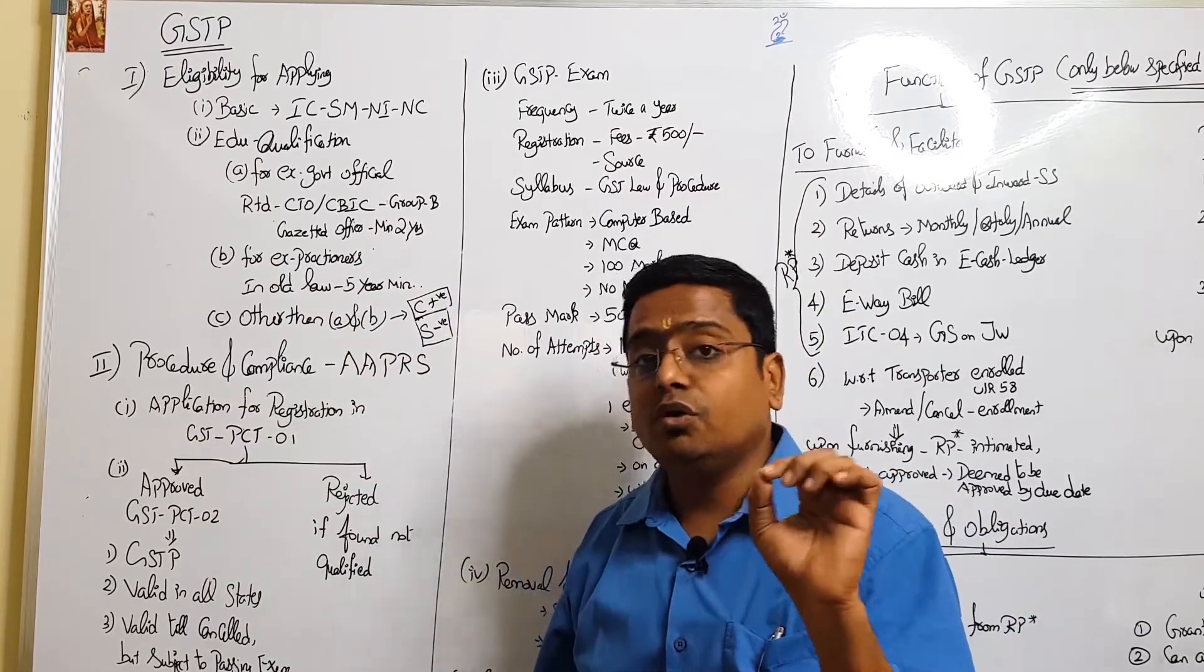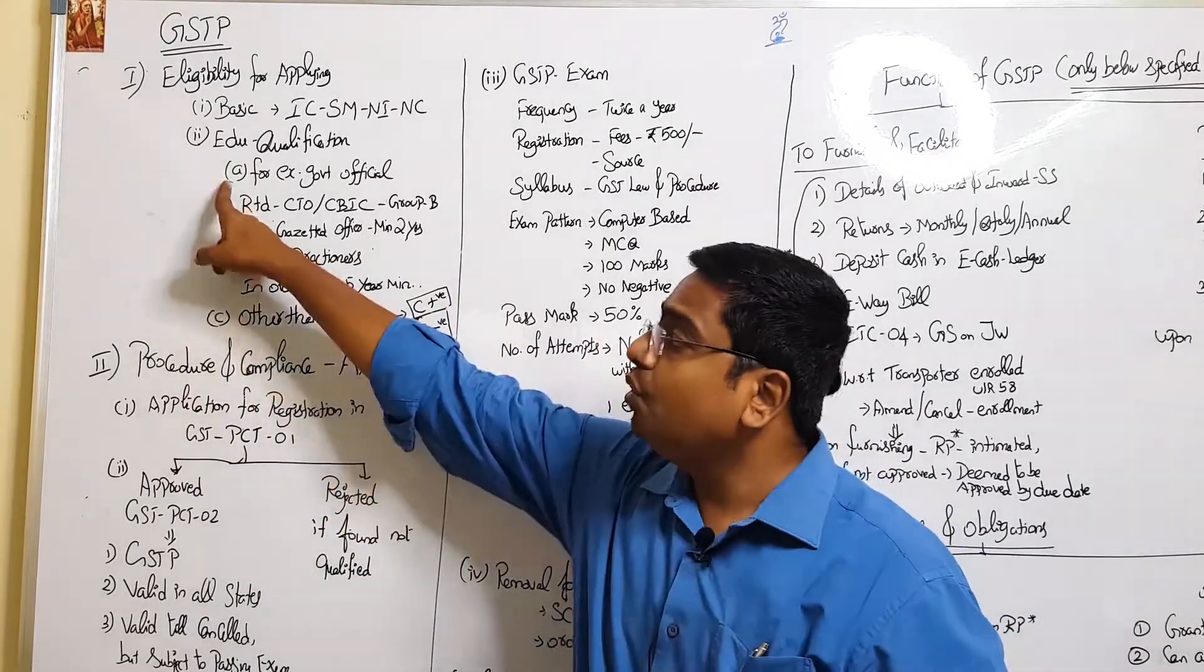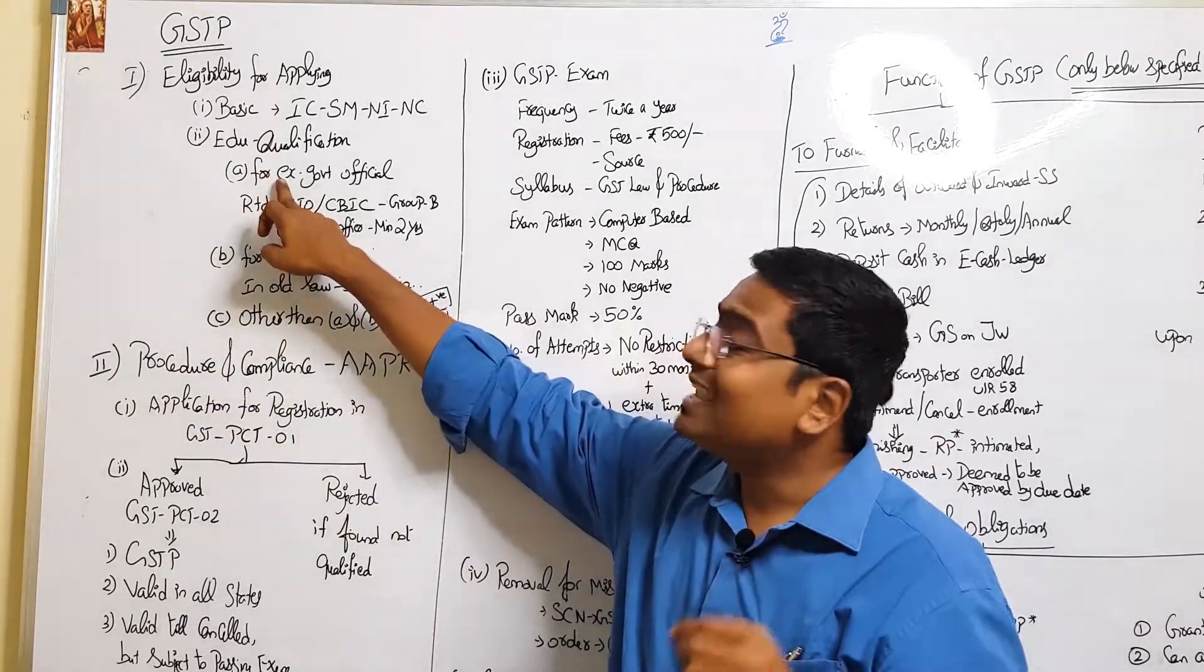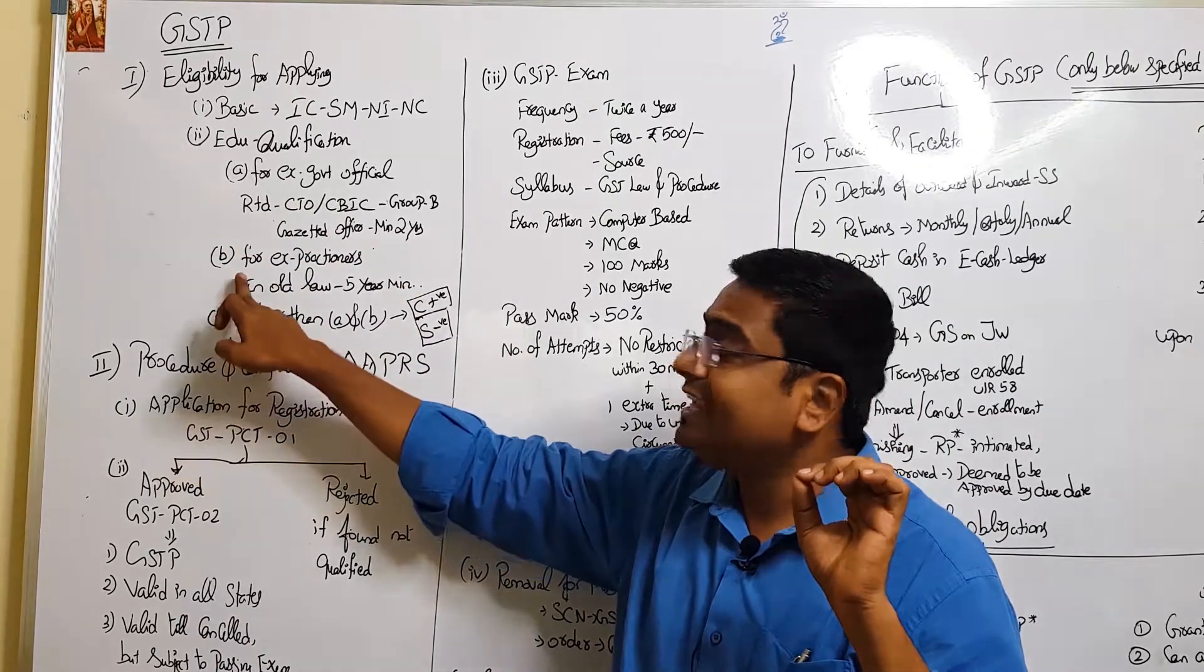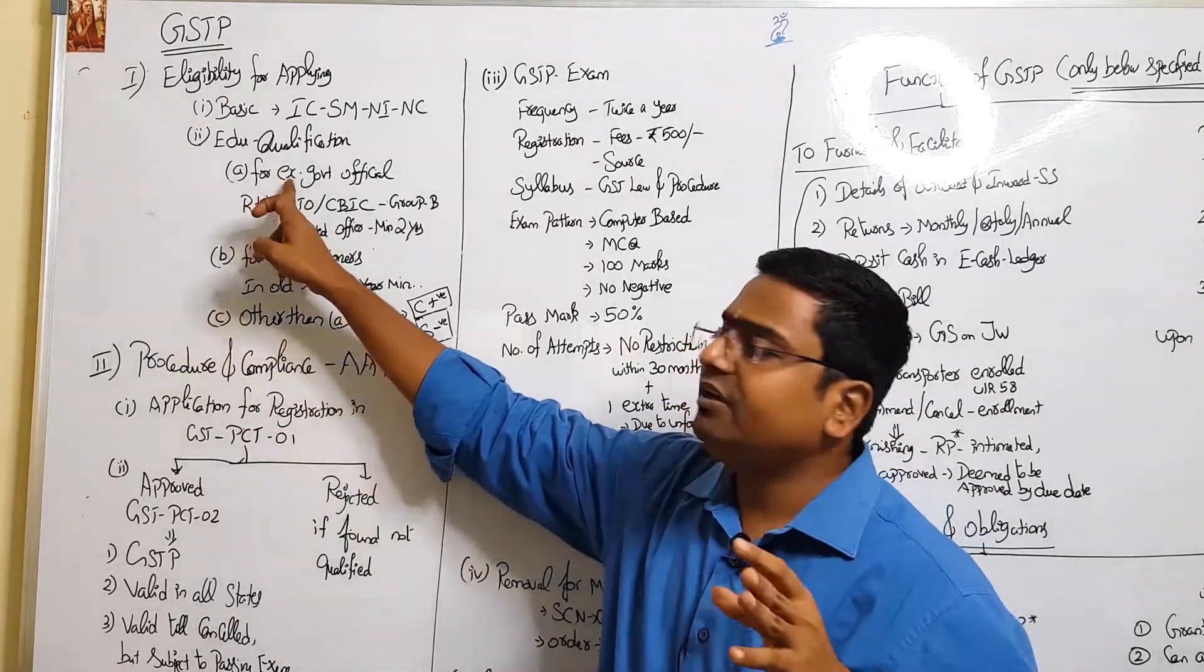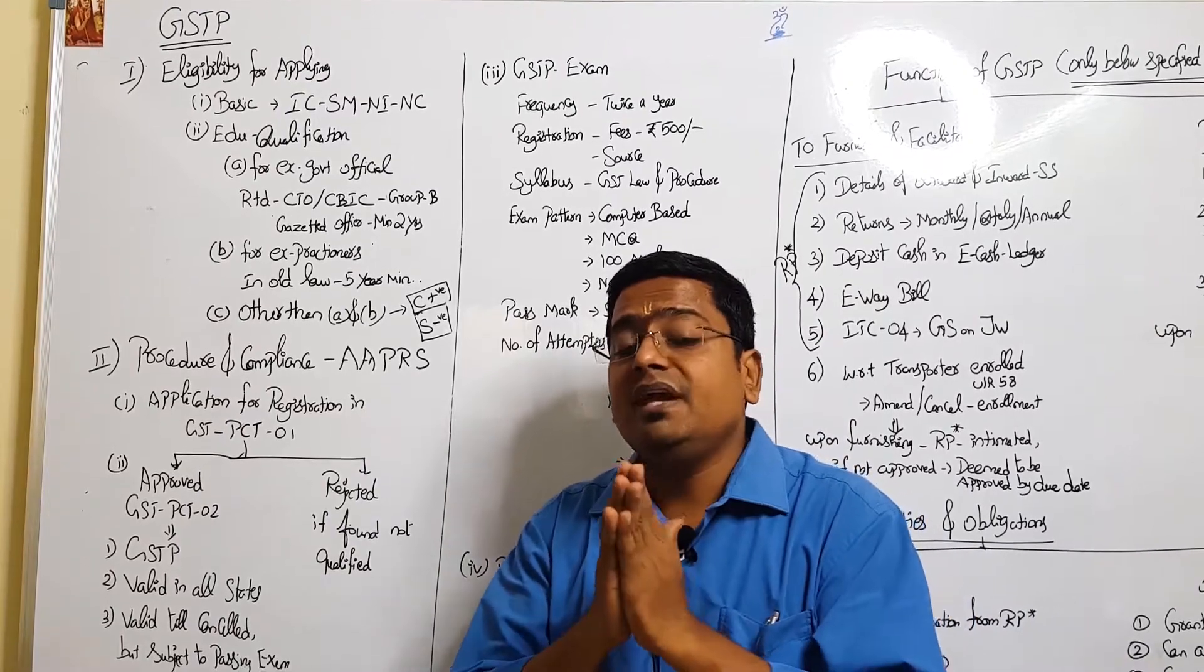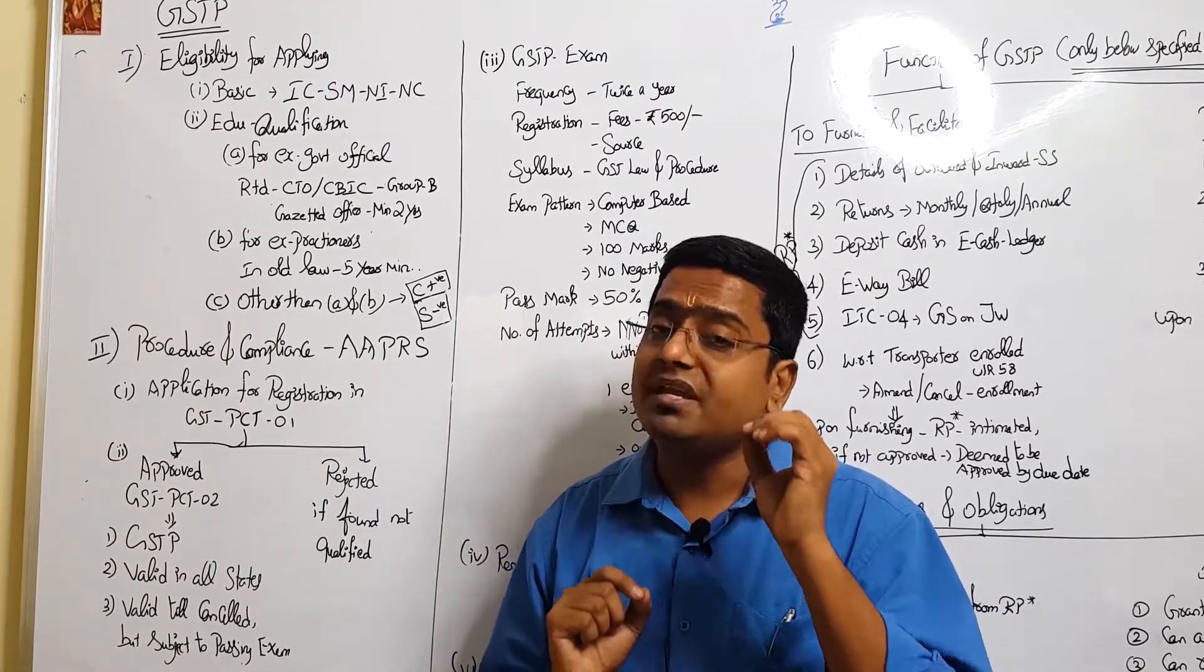In addition to that, additional qualifications are specified, which is education qualification. But education qualification is not a criteria for two special category people. First one is ex-government official and second one is ex-practitioners. Let's take government official - what is the requirement for them?